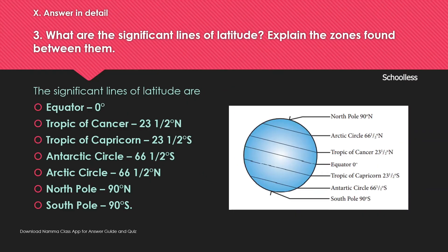What are the significant lines of latitude? Explain the zones found between them. The main latitude line is the equator.